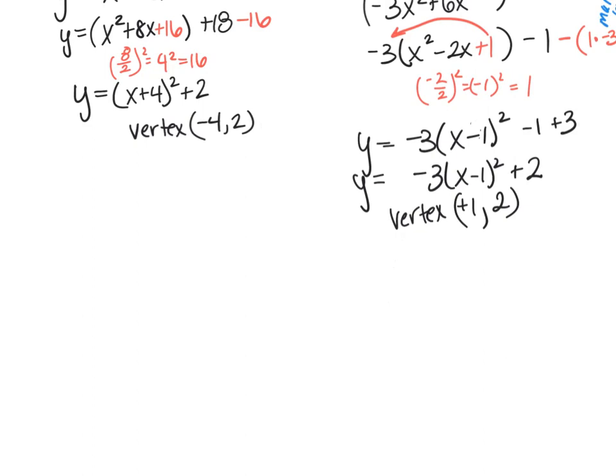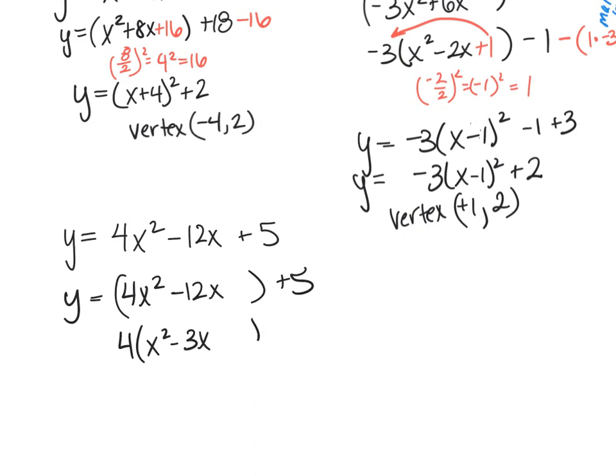So let's do another one with the coefficient. Here's another one. Separate out the 4x squared minus 12x from the 5. And now I can factor out a 4. So 4 times x squared minus 3x plus 5. Now I need to complete the square. And I purposely chose a fraction here. Not everything is going to be a whole number.